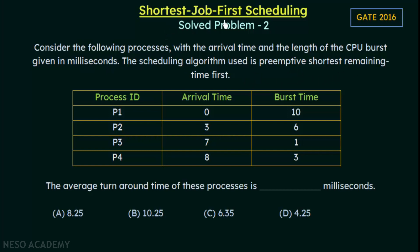Shortest remaining time first is another name for shortest job first scheduling, and it is preemptive. That means when one process is executing, if another process with a shorter burst time arrives, the executing process can be preempted — the CPU can be taken away from it and given to the shorter process. We have to calculate the average turnaround time for this set of processes. The options are: A) 8.25, B) 10.25, C) 6.35, and D) 4.25.